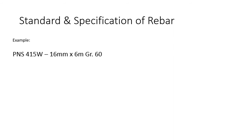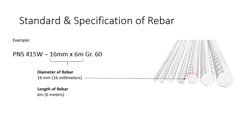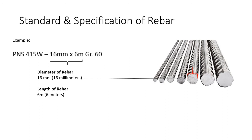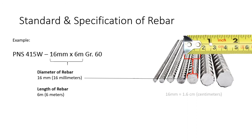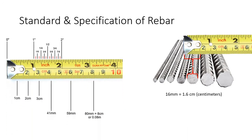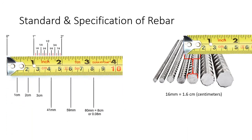Next we'll take a look at 16mm by 6 meters — the diameter of the rebar and the length of the rebar. 16mm and 6 meters. In this example, you'll see that 16mm is equal to 1.6 centimeters, as you can see in the steel meter tape.